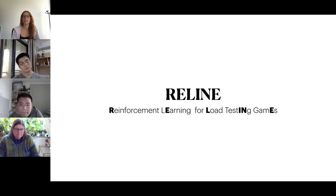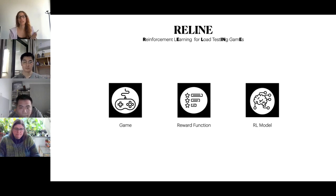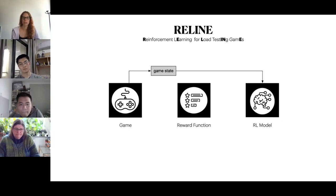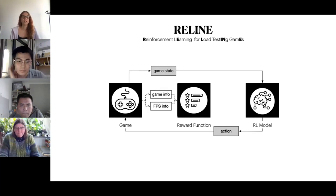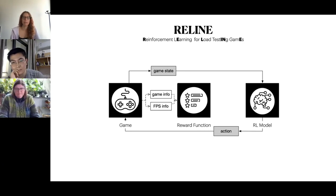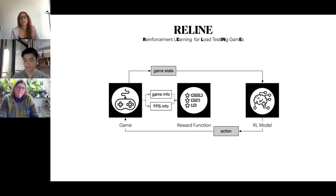We propose ReLine, an approach that exploits reinforcement learning to support game developers in the load testing activity. ReLine has three main blocks: the game, the reward function, and the reinforcement learning model representing the agent. The game provides the RL model with a representation of the current game state — for example, a screenshot of the monitor. The RL model decides which action to perform and sends it to the game, which executes the action and provides the reward function with two kinds of information: game information such as the current score or agent position (helping the agent learn how to play), and FPS information — the time the game takes to render the next frames after the chosen action — helping the agent identify low FPS points.